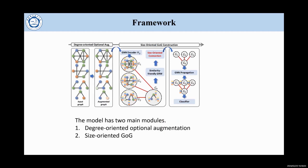Our model has two main modules. Degree-oriented Optional Augmentation is designed to solve the potential bias of augmentation methods for graphs with different average degrees.